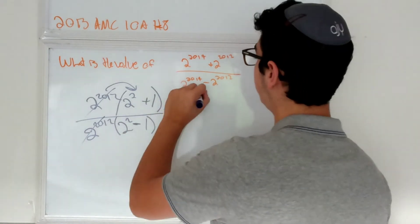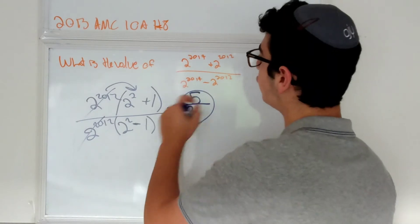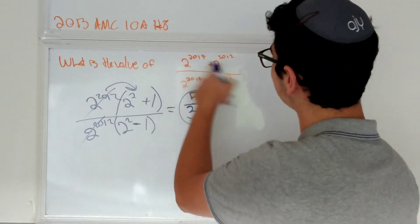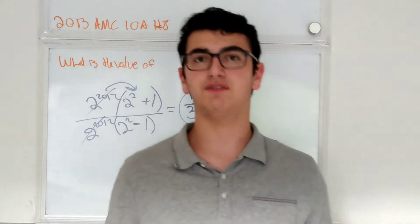Well, 2 squared plus 1, that's going to be 5. 2 squared minus 1, that's going to be 3. So the value of this crazy expression can actually just be factored into some simple expression that's just 5 over 3.